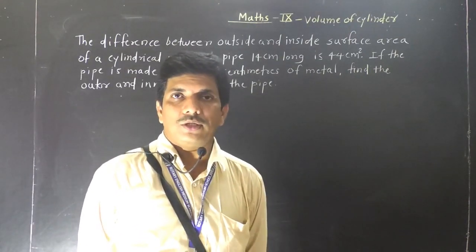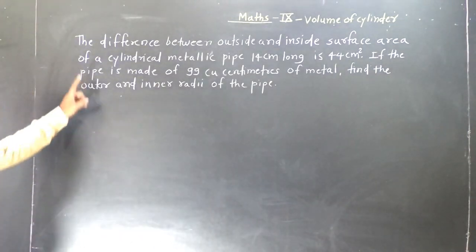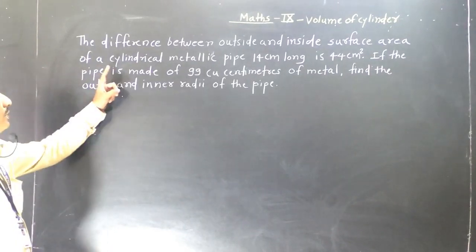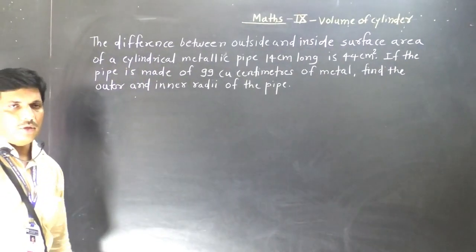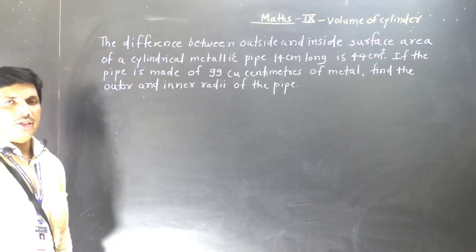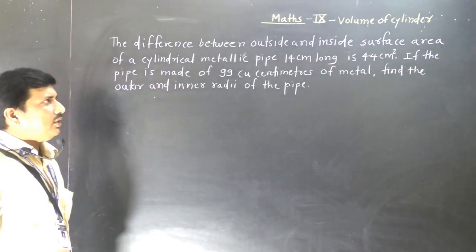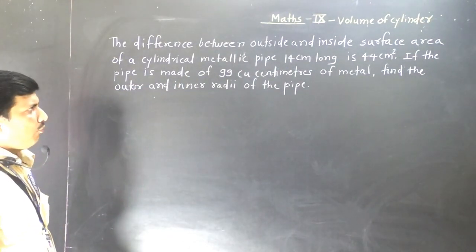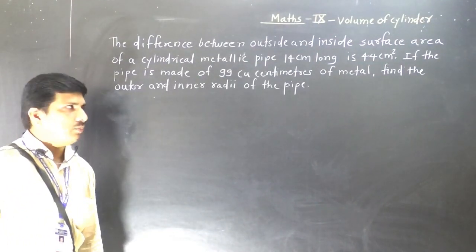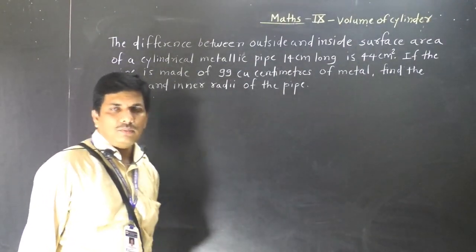We will solve some problems which depend on the same concept. The first problem is: the difference between outside and inside surface area of a cylindrical metallic pipe 14 cm long is 44 cm square. If the pipe is made of 99 cubic centimeters of metal, find the outer and inner radius of the pipe.